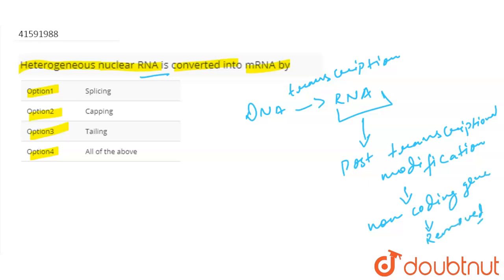So basically, how does mRNA formation happen? What happens in this case? It happens in splicing, it happens in capping, it happens in tailing. So in option 1 splicing, option 2 capping, option 3 tailing - it happens in these 3 things.